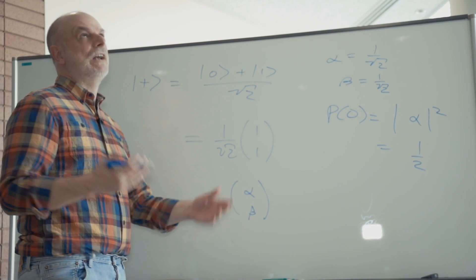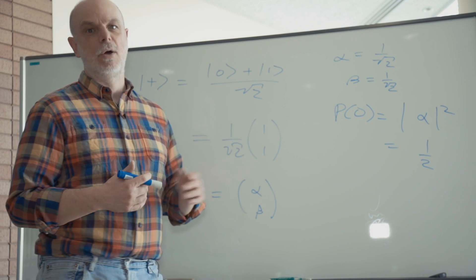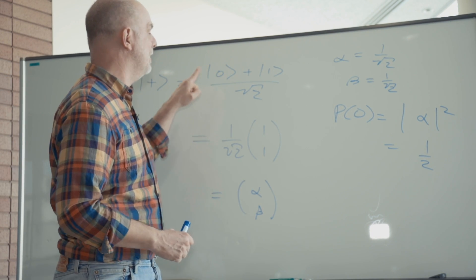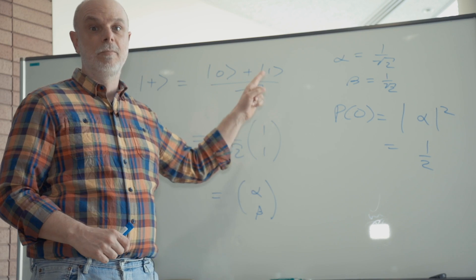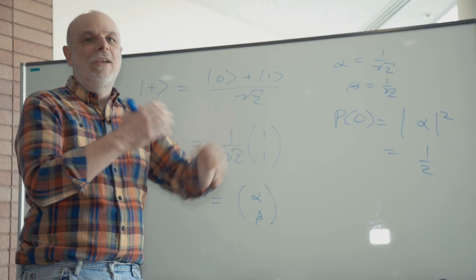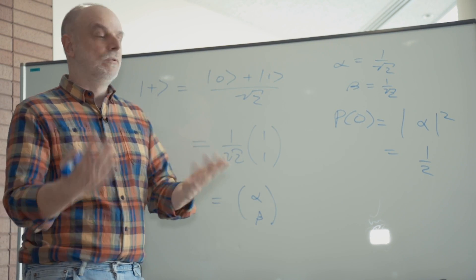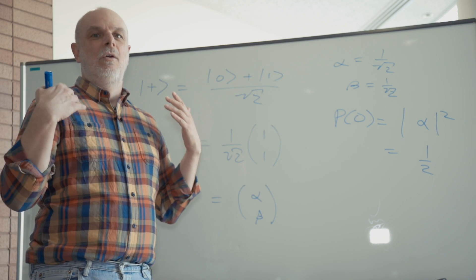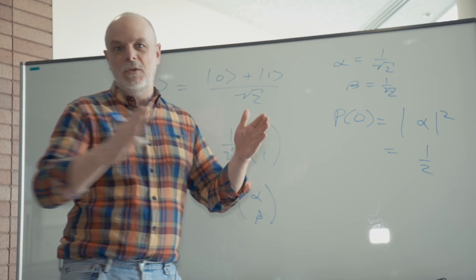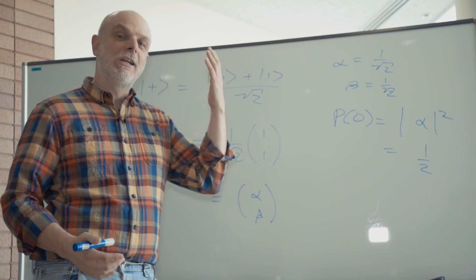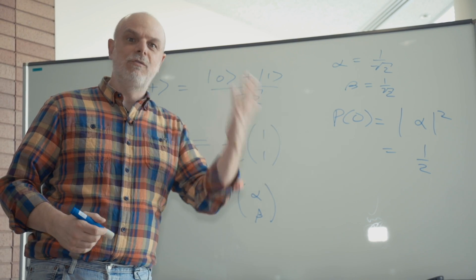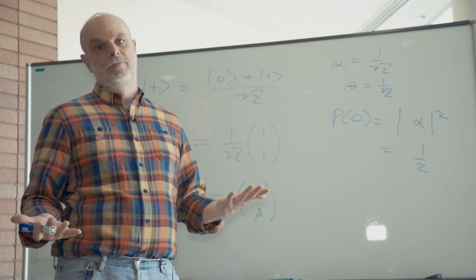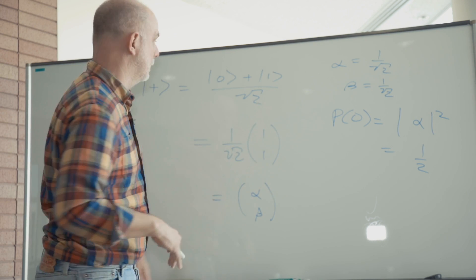For example — this is actually sort of not the greatest example, but we can go with it. Say we're trying to create the state |0⟩ + |1⟩, but our device keeps failing. So instead it only creates the state |0⟩. Then we would always get 0 when we measure it, but we were expecting 50% zeros and 50% ones. So our fidelity would be 50%.